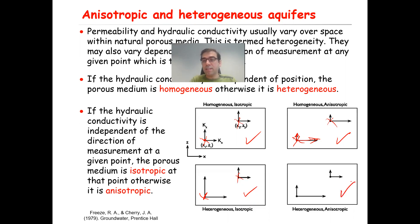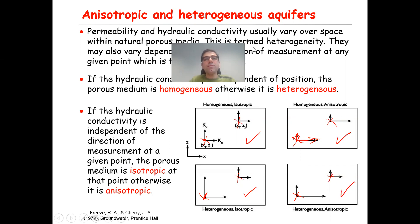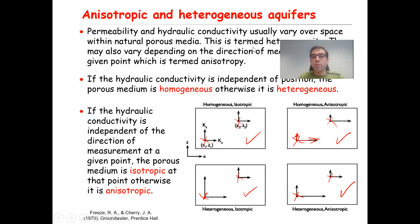The last one is an example of heterogeneous and anisotropic porous media. Why? Because depending on the location here versus here, you're getting different values of permeability, which suggests the medium is heterogeneous. And also, depending on the direction of your measurement — the vertical one versus the horizontal one — you get a different value of permeability. Therefore, this is an anisotropic aquifer. That was basically all about the definition of homogeneous, heterogeneous, isotropic, and anisotropic aquifers. I hope you found this lecture helpful. Thank you.